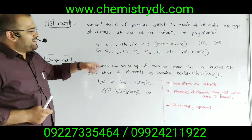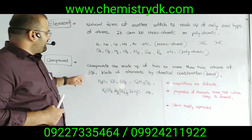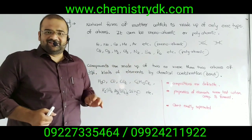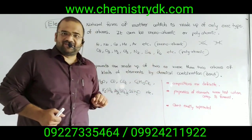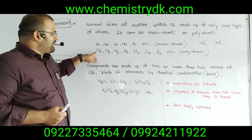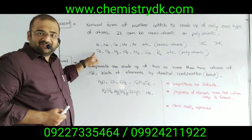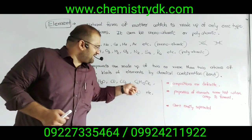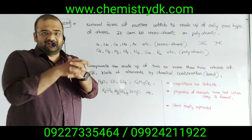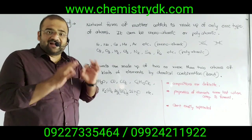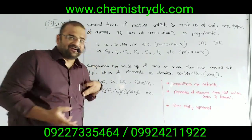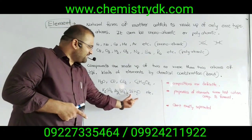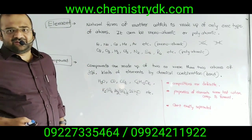Compounds are made up of two or more atoms of different kinds of elements joined by chemical combination, which means a chemical bond. H2O is a compound. O2 is not a compound — though it has two atoms, they are the same kind. In H2O, CO, and CO2 there are at least two kinds of atoms. C6H12O6 has three kinds of atoms: carbon, hydrogen, and oxygen. Different kinds of atoms combine together by a chemical bond to form a compound. Compounds can be small or large molecules, like potassium alum K2SO4·Al2(SO4)3·24H2O.